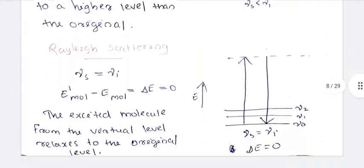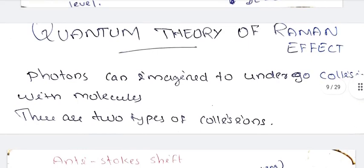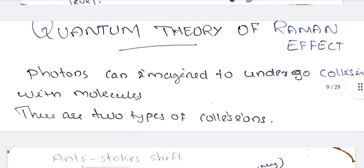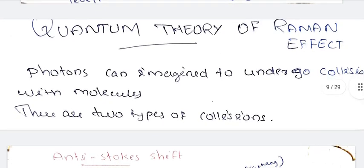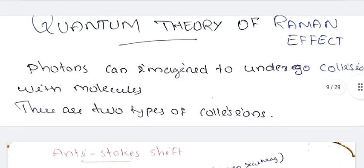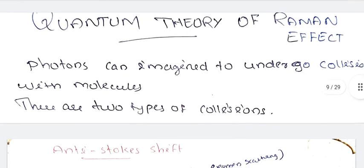We are talking about the quantum theory of Raman effect. According to the quantum theory of Raman effect, photons are imagined to undergo collision with molecules. You will find two types of collisions: elastic collisions and inelastic collisions.